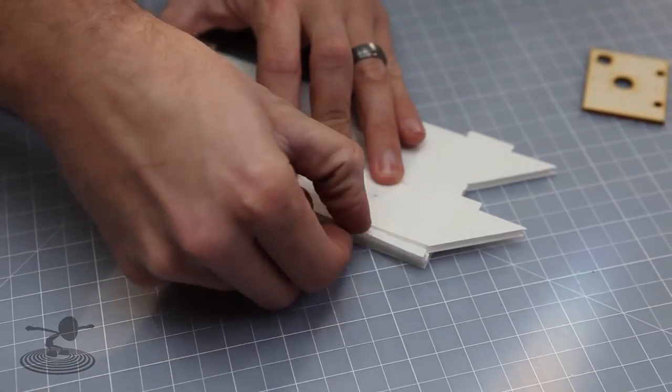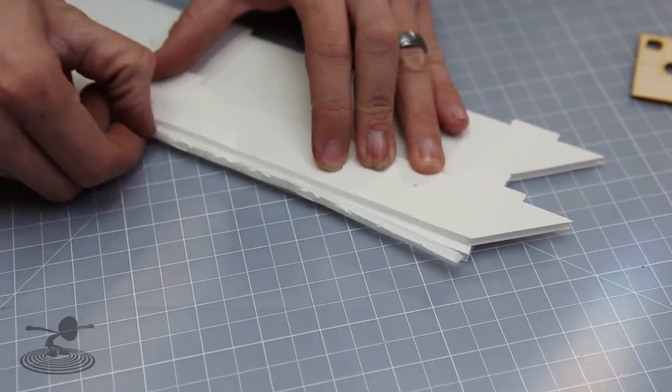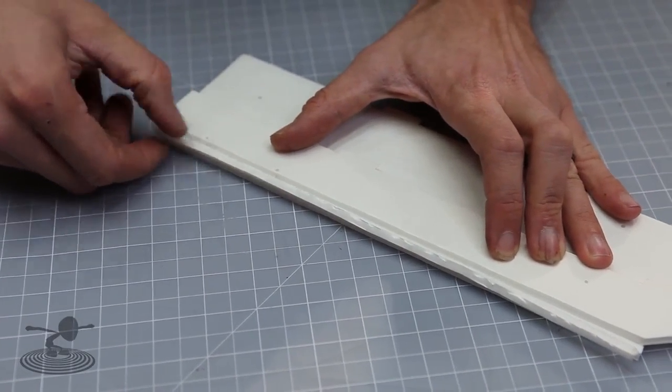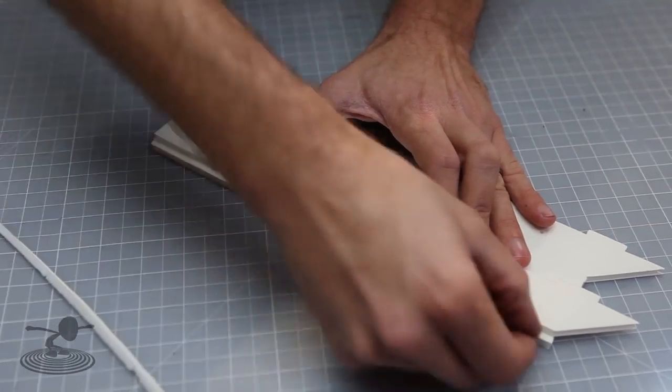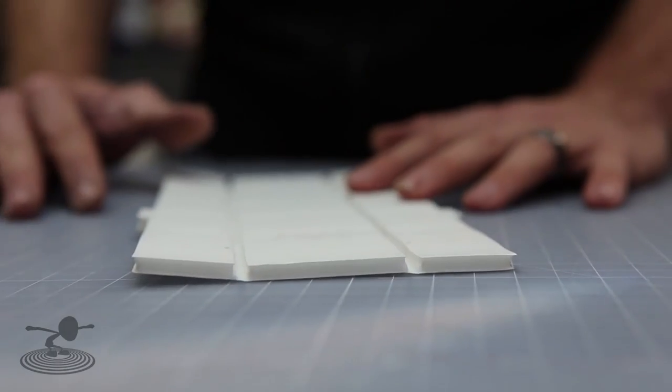You can use your fingernail if you have some and just rotate it off. If you've cut your score cuts deep enough, this will pop off in one complete piece just like that. Make sure that your groove is nice and clean of any debris, and do the same for the other side.